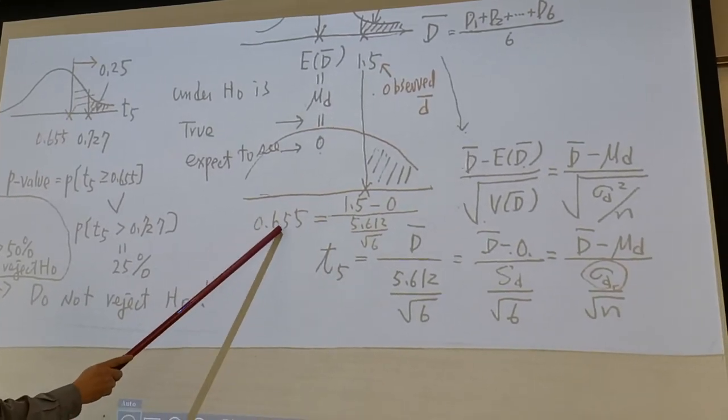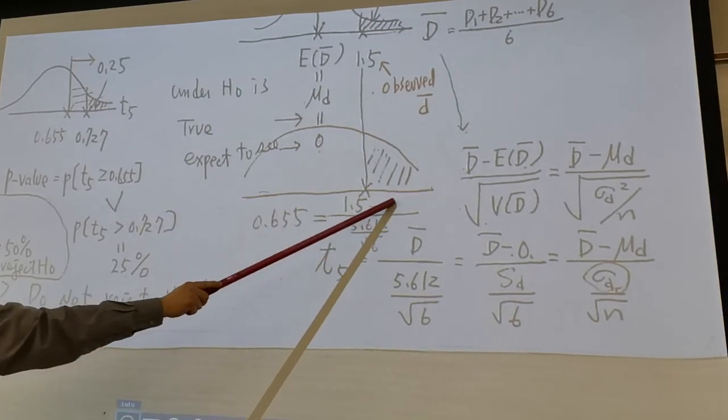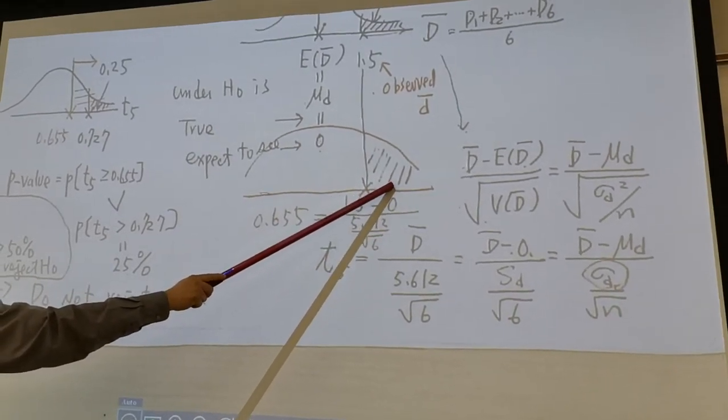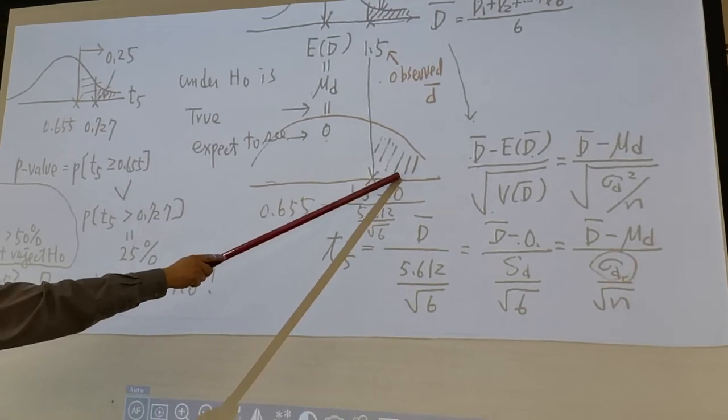So t with 5 degrees of freedom, greater or equal to 0.655, that is this area here. To find the size of this area, we need to use t table.